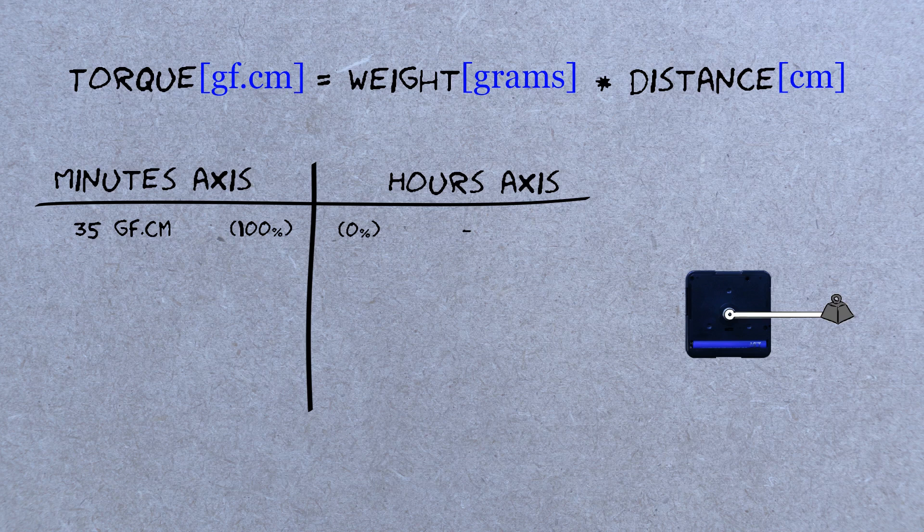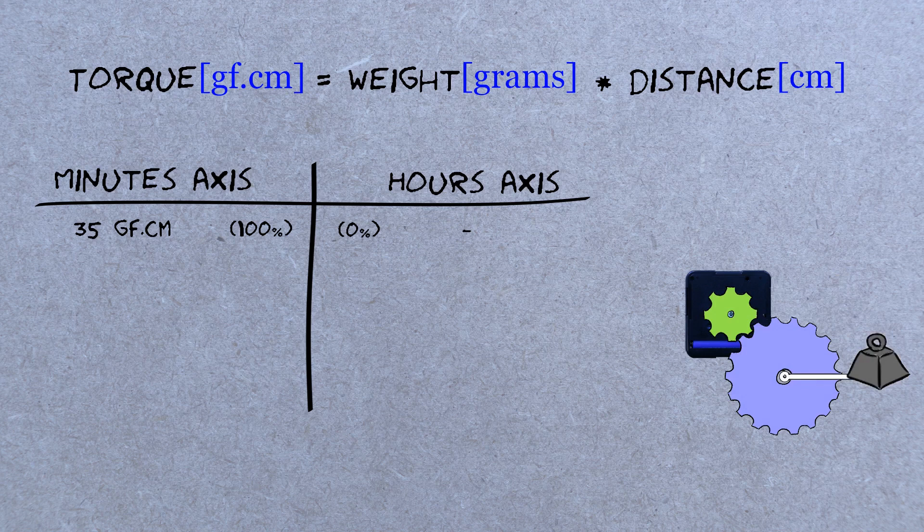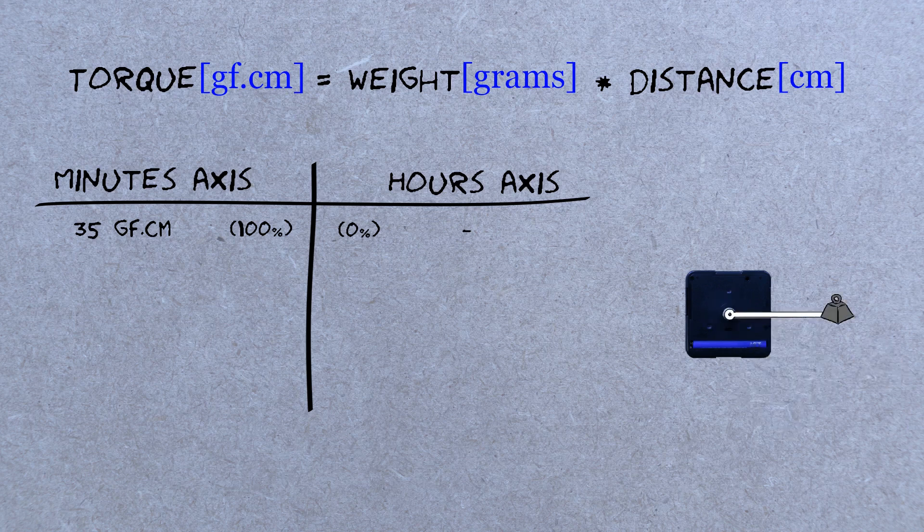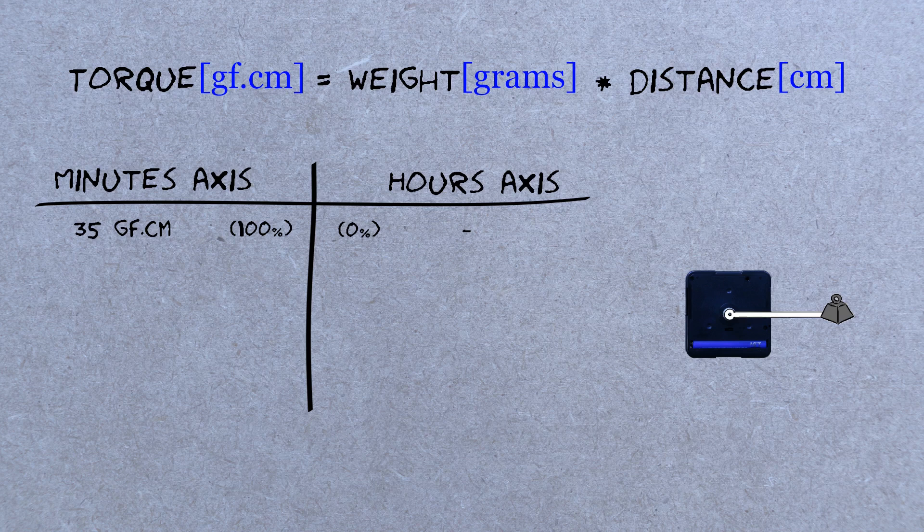One way to allow for heavier weights or longer hands would be to use counterweights. Another way would be to slow down the rotation with a pair of geared wheels. And in this case, the second gear would be slower, but it would also provide more torque. And that is actually exactly what's happening with the hours axis. A bunch of gears is connected to the minutes axis and is slowing it down by a factor 12 to create the hours axis. So, I did again the same type of measurements, but this time using only the hours axis. And the torque available on that axis is 250 gram force centimeters.